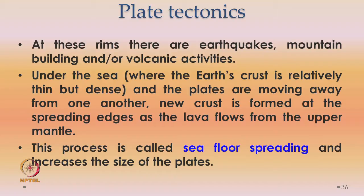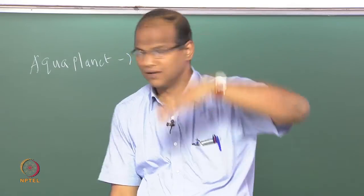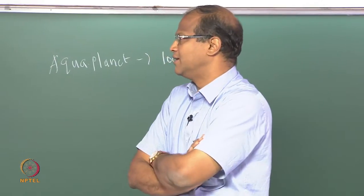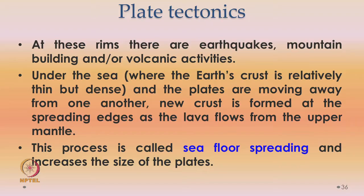Under the sea, where the earth's crust is relatively thin — because a lot of depth is already covered by water — the crust is relatively thin but dense. The plates are moving away from one another. New crust is formed at the spreading edges as the lava flows from the upper mantle. This process is called sea floor spreading and it increases the size of the plates.